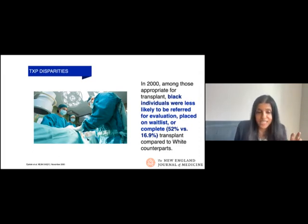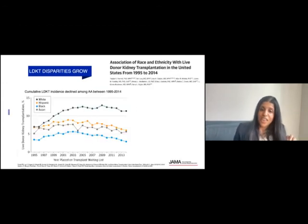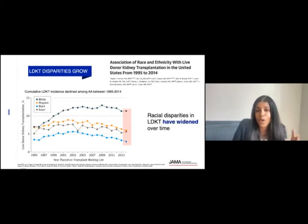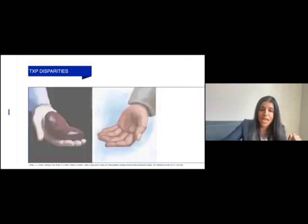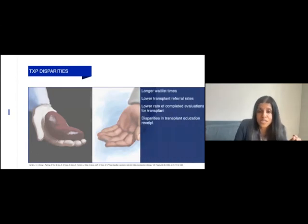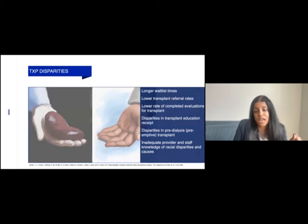Unfortunately, in the last two decades, though we've made some progress, other arenas have gotten worse. Disparities in living donor kidney transplantation have only widened over time. We're contending with persistent disparities in wait list times, referral rates, completed evaluations, receipt of transplant education, predialysis care and preemptive transplantation, and gaps in provider and staff knowledge of racial disparities and their causes.